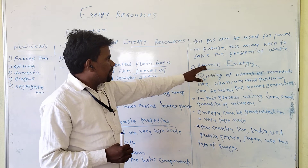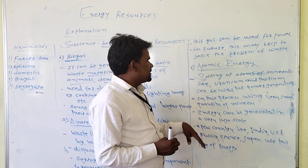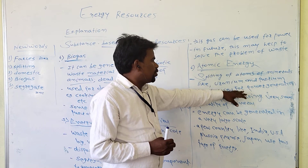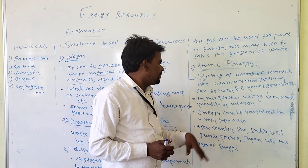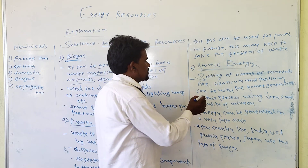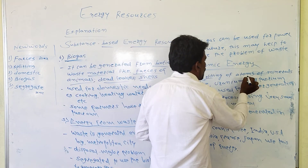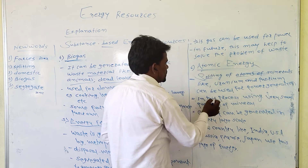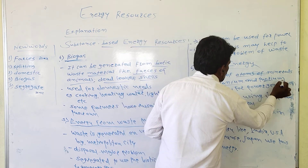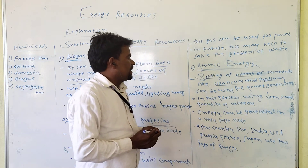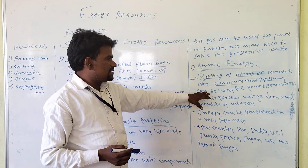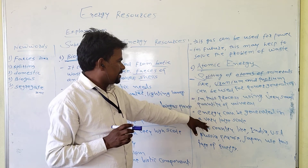Next: atomic energy. Splitting of atoms of minerals like uranium and thorium can be used for power generation. This is the process of power generation.